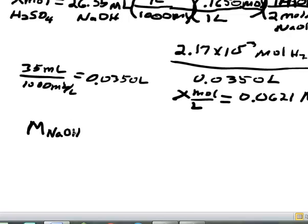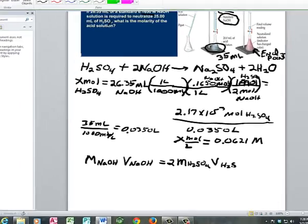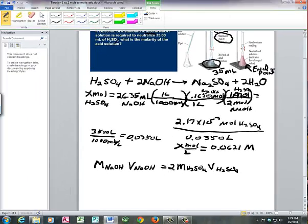I'm using the molarity of the NaOH times the volume of the NaOH. That equals 2 times the molarity of the H2SO4 times the volume of the H2SO4. If you don't understand why the 2 has to go here, you can work on that concept, or you can trust me. The reason that 2 goes here is because we're actually looking for the molarity of this molecule, not the molarity of the protons.